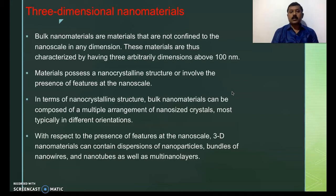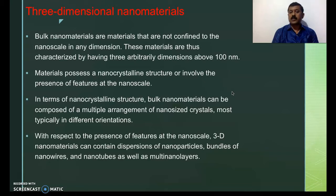Three-dimensional nanomaterials are not really nano in the sense that no dimension is confined to the nanoscale — all three dimensions are in the micro region. But they possess properties or features similar to nano. They can contain dispersions of nanoparticles, bundles of nanowires or nanotubes, and multi-nano layers. They find very important roles in the construction and civil engineering industries, because nano fibers are embedded in a matrix to form composite materials that play an important role in construction materials.